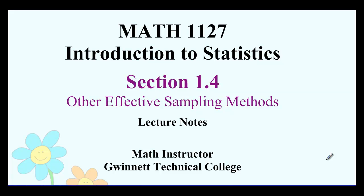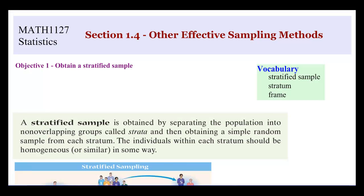Let's talk about section 1.4, which is going to be other effective sampling methods. In the last section, we talked about simple random sampling, and now we're going to add to the types of sampling that we know about.